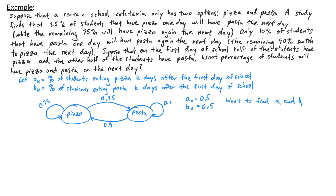We're asked to find A1 and B1 — the percentages one day after the first day. The percentage eating pizza on the second day comes from two sources: 75% of students eating pizza the first day and 90% of students eating pasta the first day. So A1 = 0.75·A0 + 0.9·B0. Similarly, B1 comes from 25% of students eating pizza the first day and 10% eating pasta the first day, giving B1 = 0.25·A0 + 0.1·B0.